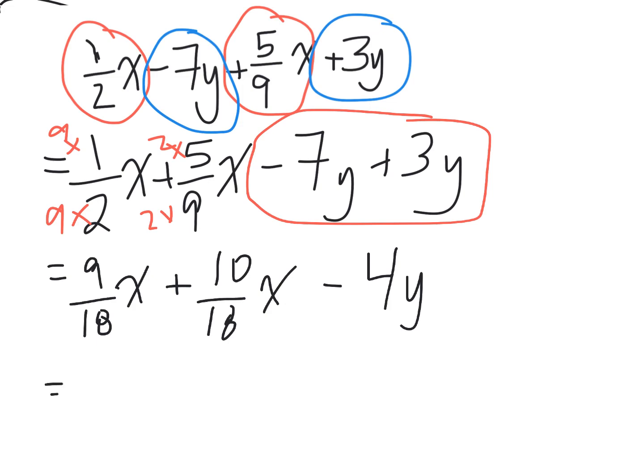And now because I've made common denominators, I know that this would be over 18 because you do not add the denominators, and 9 plus 10 is 19x. That's a really ugly looking 19, let me just see if I can redraw that for you there, not better. 19x minus 4y and that looks perfect.